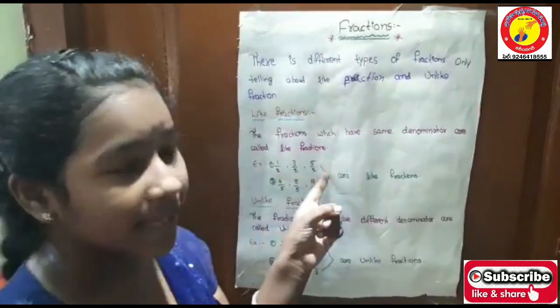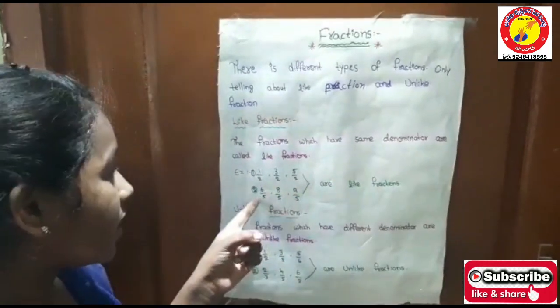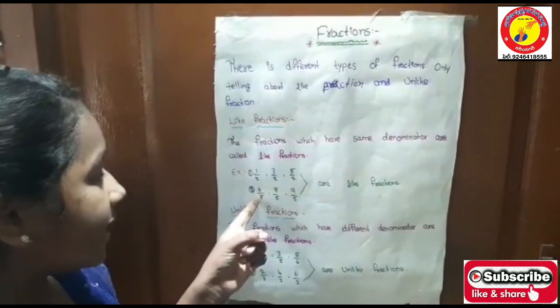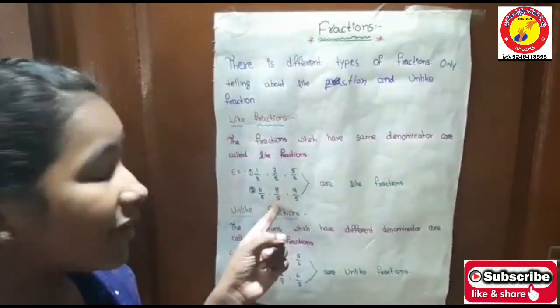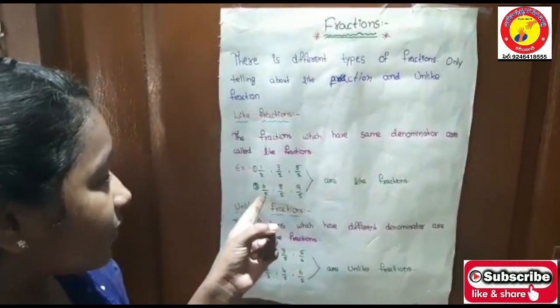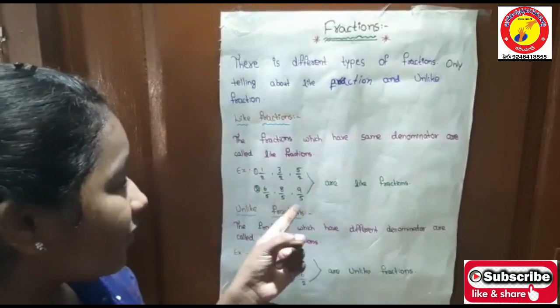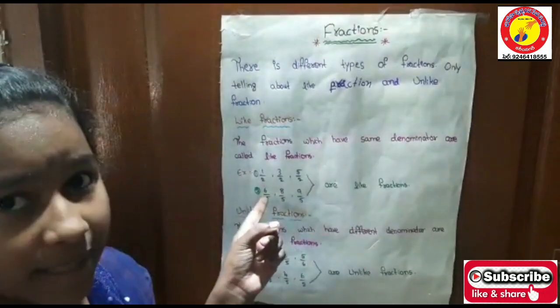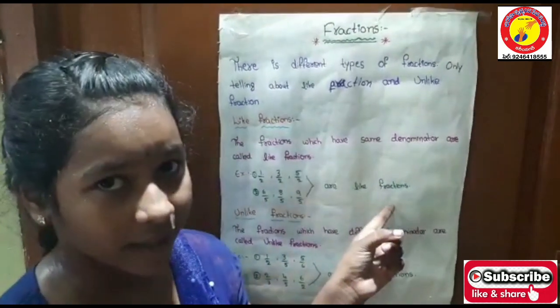See — 2, 2, 2. They are called like fractions. Second example: 6/5, 8/5, 9/5. See, same like the first example — 5, 5, 5. The denominators are the same. So they are called like fractions.